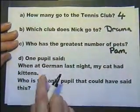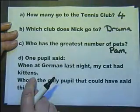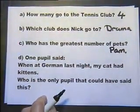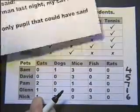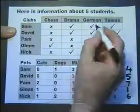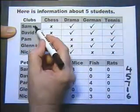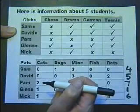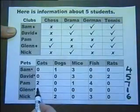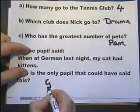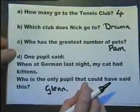Now one pupil said: 'When I was at German last night, my cat had kittens.' Who was the only pupil who could possibly have said that? So one pupil goes to the German club and has a cat. Looking at the clubs table: Sam, David, and Glenn go to the German club. Now which of those three people actually has a cat? Sam doesn't have a cat, David doesn't have a cat, Glenn does. So Glenn is the only one who goes to German and has a cat — therefore he's the only one who could possibly have meant his cat had kittens.